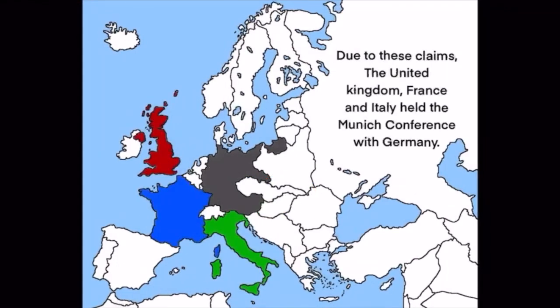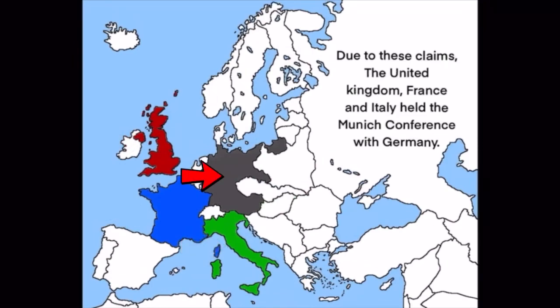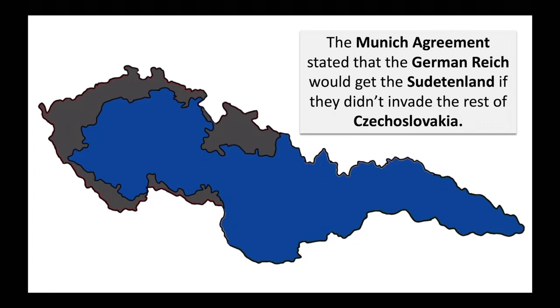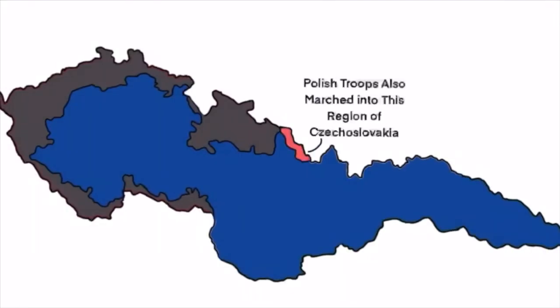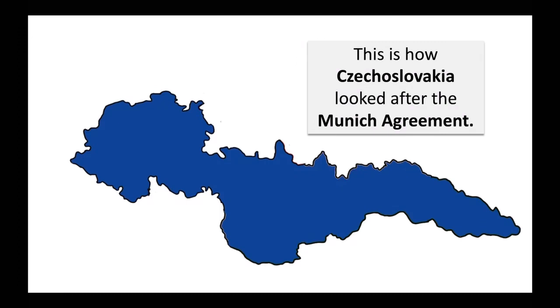Due to these claims, the United Kingdom, France, and Italy held the Munich Conference with Germany. The Munich Agreement stated that the German Reich would get the Sudetenland if they didn't invade the rest of Czechoslovakia. Polish troops also marched into this small region of Czechoslovakia. This is how Czechoslovakia looked after the Munich Agreement.